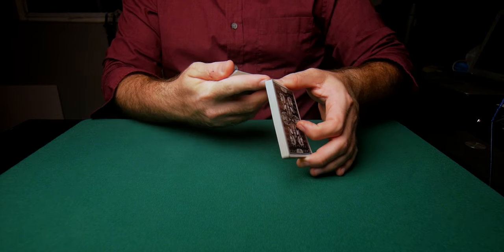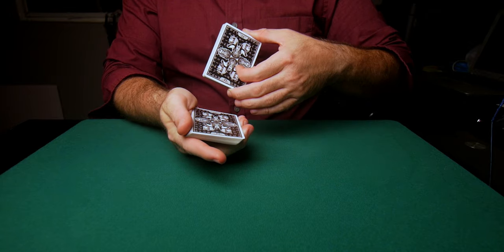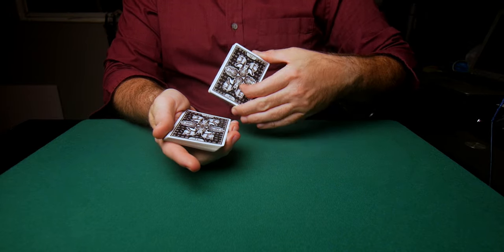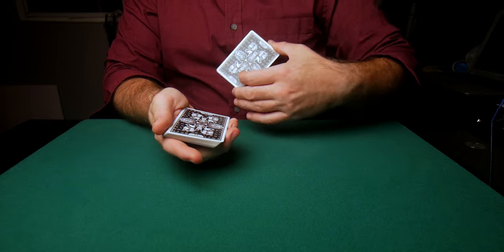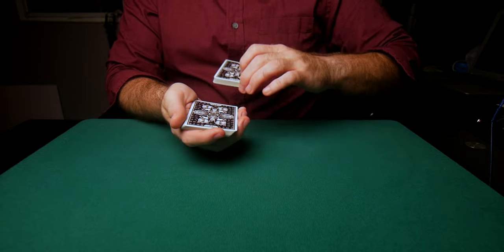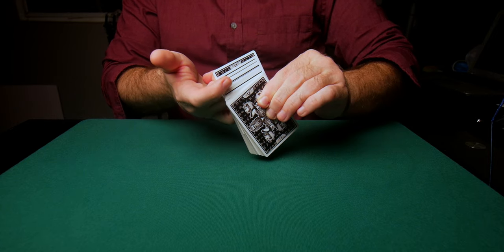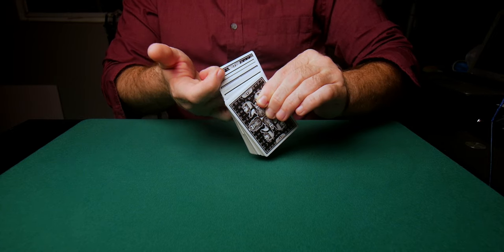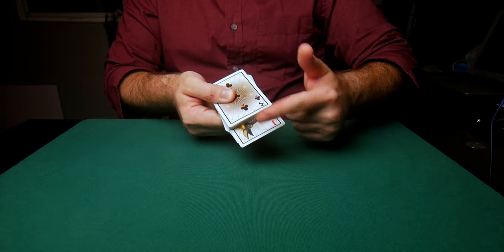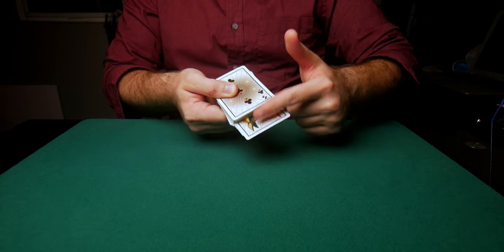You're going to make these cards down here shove outwards, or as we call it, generate an in-jog—in, because it's coming in towards you. So as I throw this packet on top, you'll see that the friction has pushed the cards that are on top of our selection towards the back. This is what we would call the in-jog.